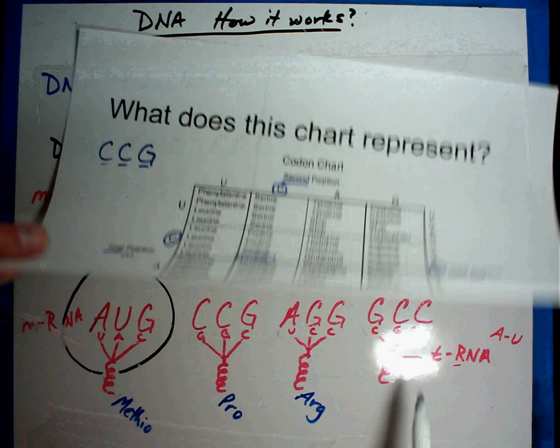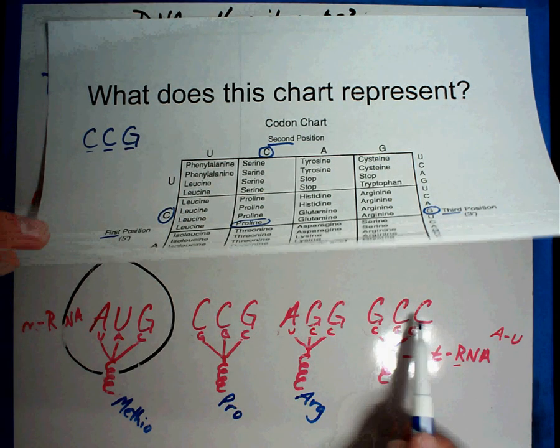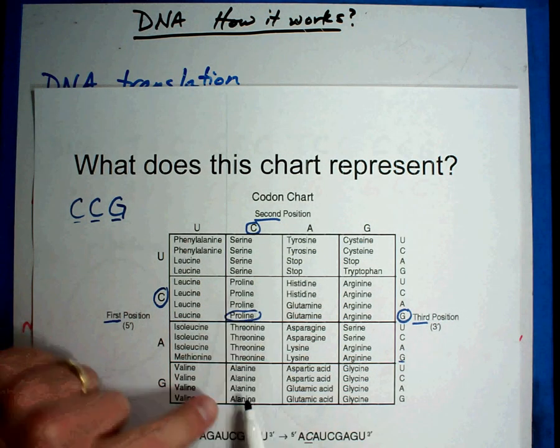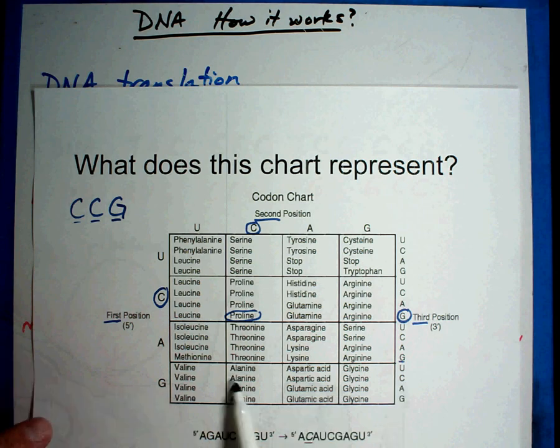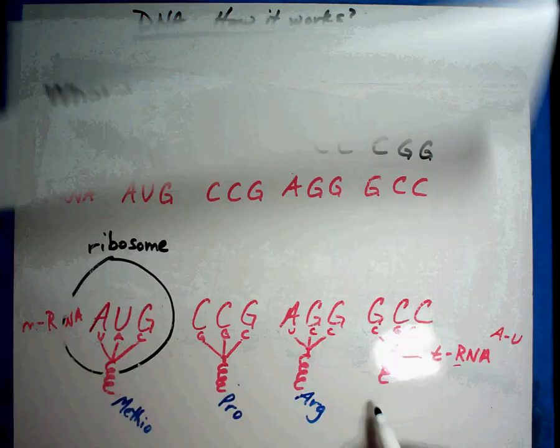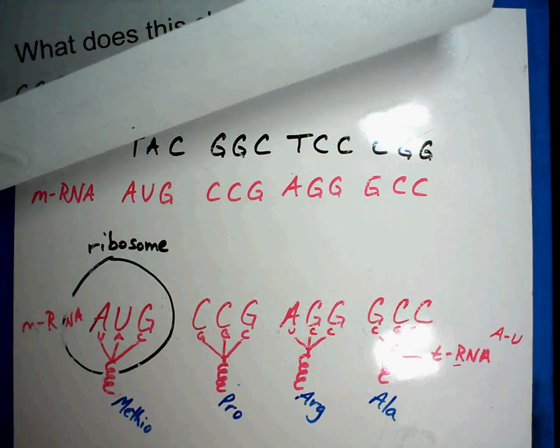And the last one is G, C, C. Let's see how we did on this one. G, C. So it's in this one. C is the second one down this time. So it's alanine. A, L, A. We'll just abbreviate like that.